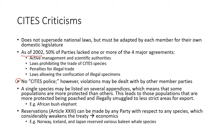As of 2002, 50% of parties lacked one or more of these: active management and scientific authorities — scientists on the ground actively managing populations — laws prohibiting trade of CITES species, penalties for illegal trade, and laws allowing confiscation of illegal specimens. Even if something is on CITES and there's a law, there may not be penalties or a blind eye may be turned. Corruption is rampant around the world.